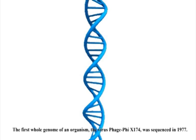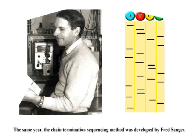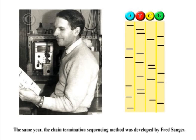The first whole genome of an organism, the virus Phage-phi-X174, was sequenced in 1977. The same year, the chain termination sequencing method was developed by Fred Sanger.